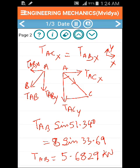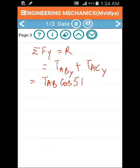This is TAB cos 51.34 plus TAC cos 33.69.